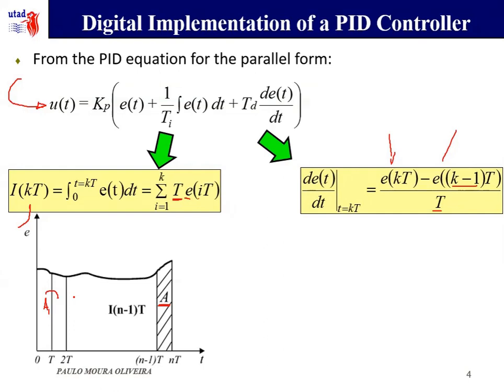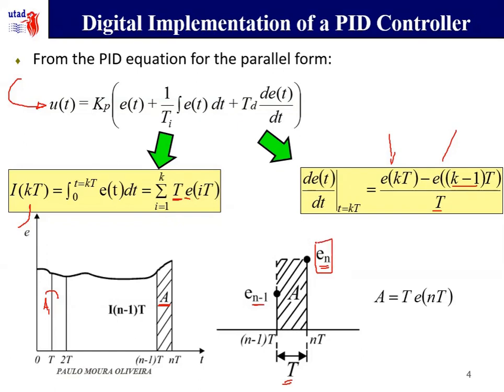We can obtain the integral of the error in the recursive way. The approximation that we are going to use here is known as the backward rectangle approximation, because we start from a sample N and we use the rectangle backwards to the sample N minus one. The area of this rectangle is approximated by multiplying the base, the sampling time, times the value of the sample. And this is the approximation which is used in this sum here.